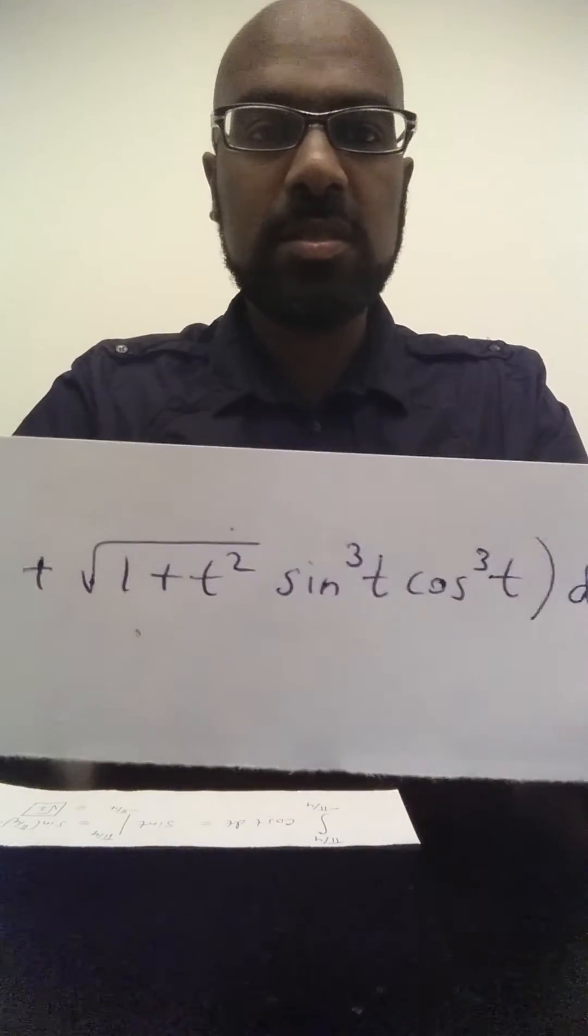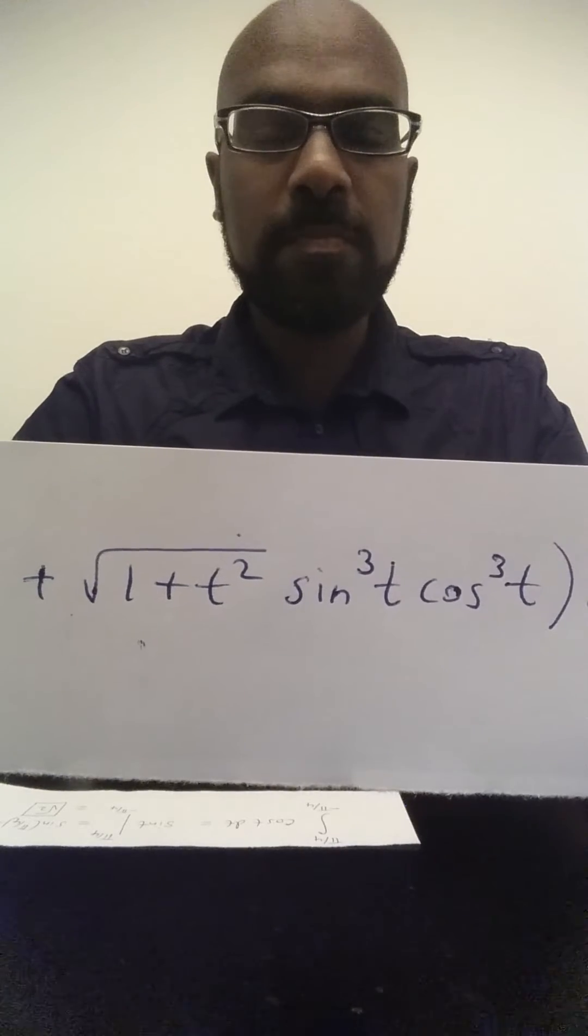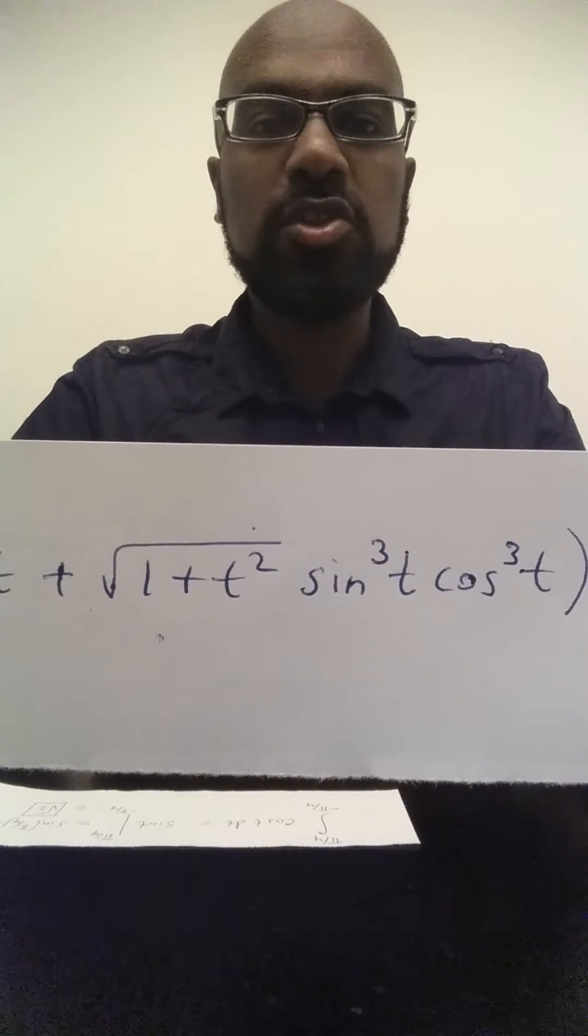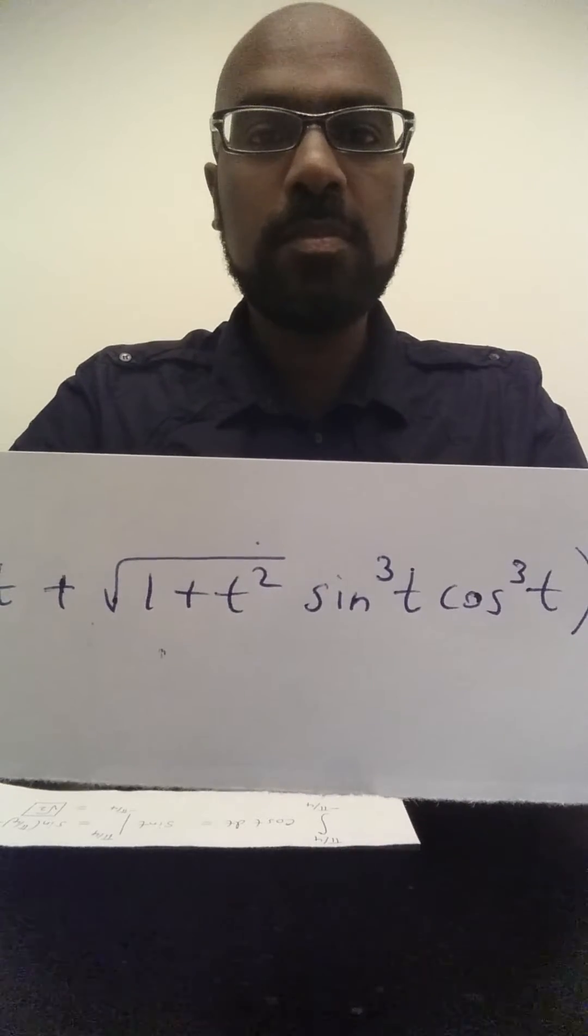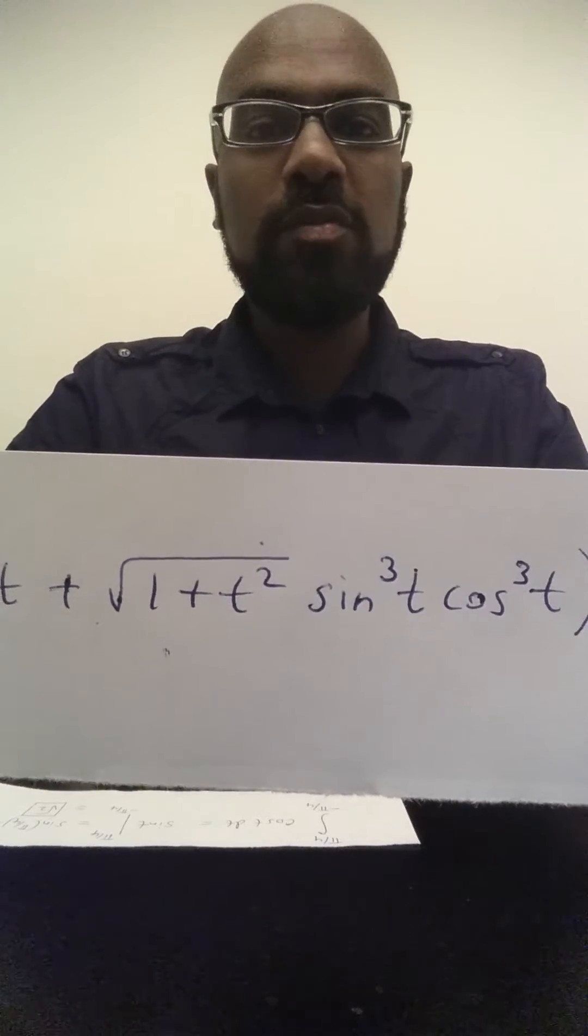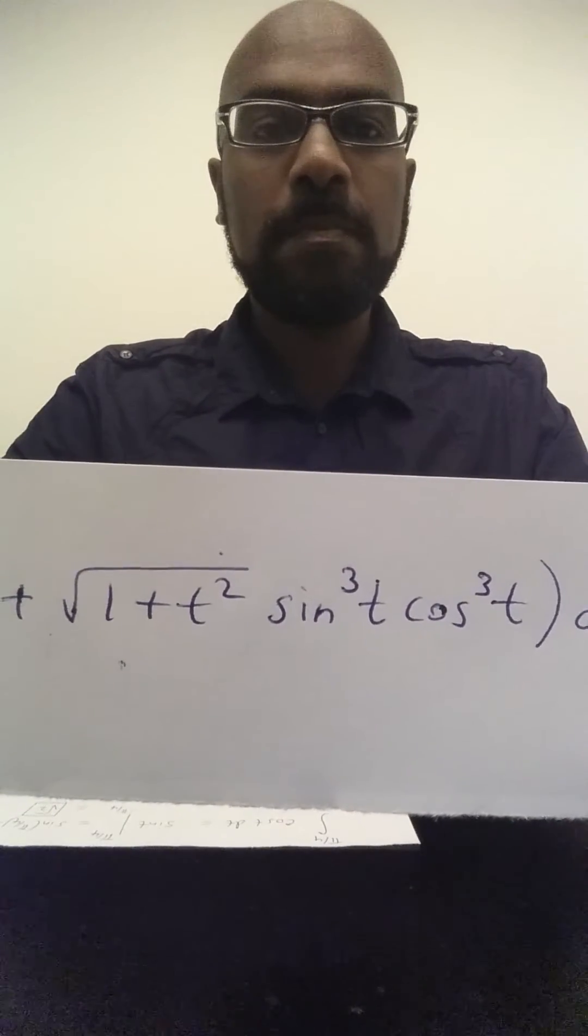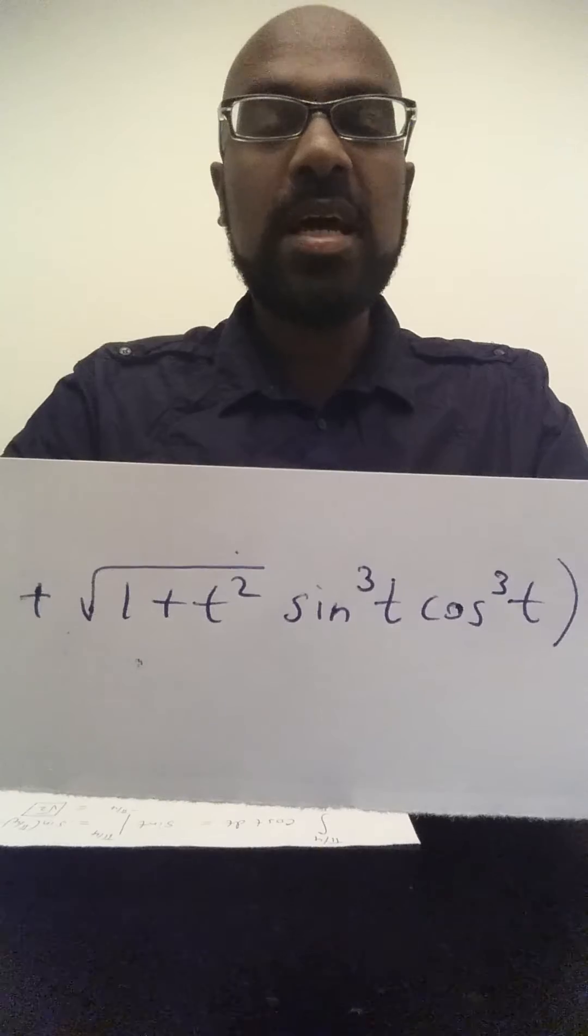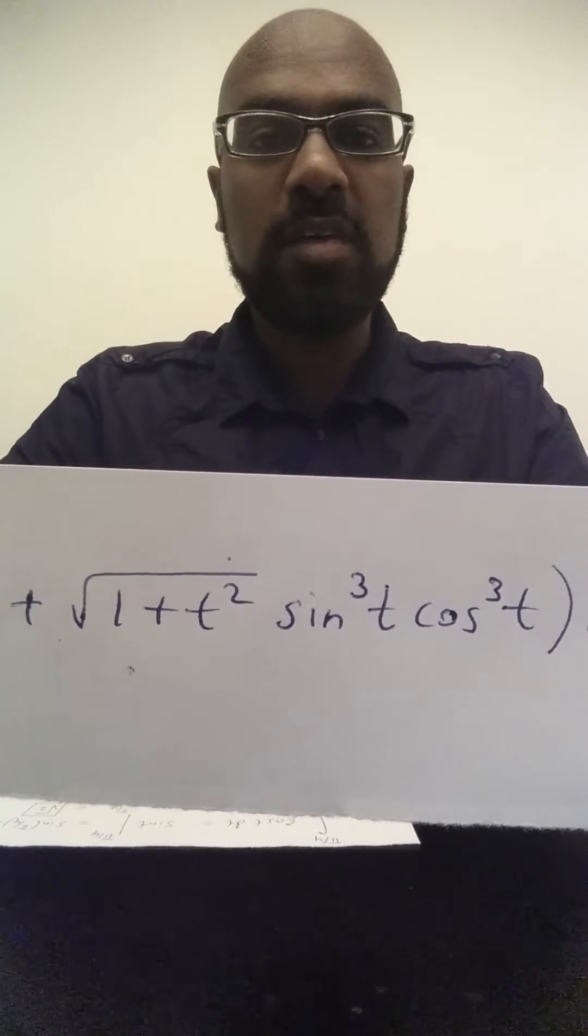So let's examine this seemingly complicated function right here in the integrand. If we take a look at the function square root of 1 plus t squared, notice t squared is even, and square root of 1 plus t squared itself will be even as well. Now sine of t is an odd function, so sine of t cubed is an odd function as well,